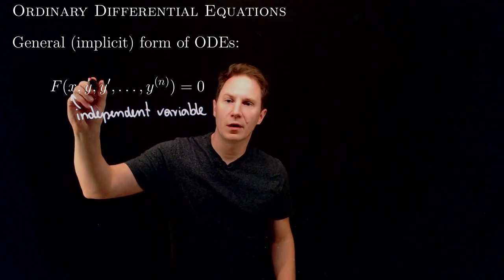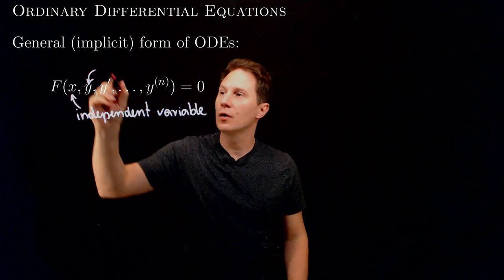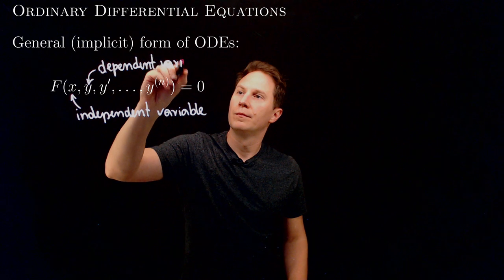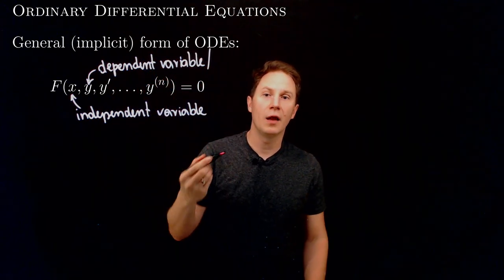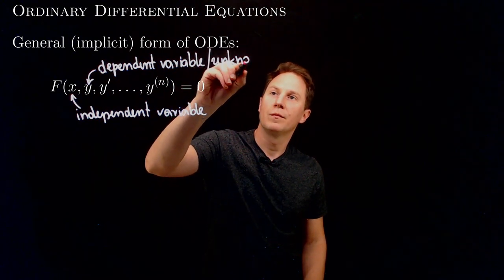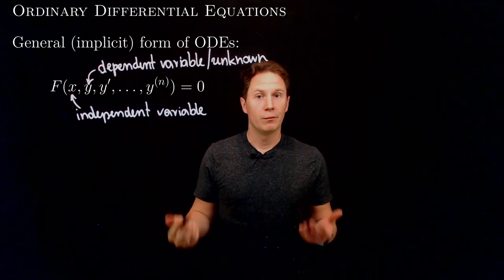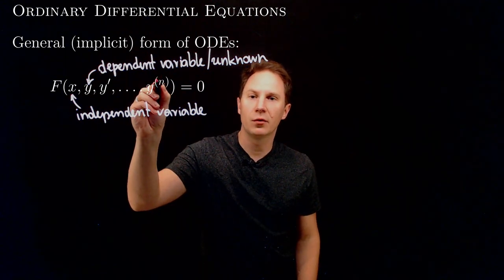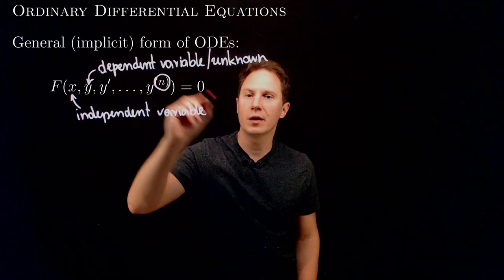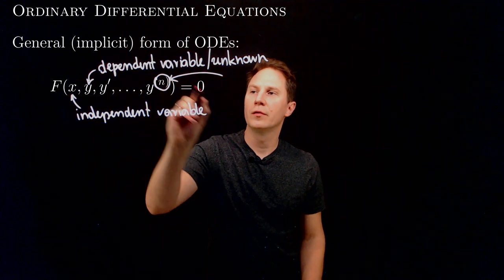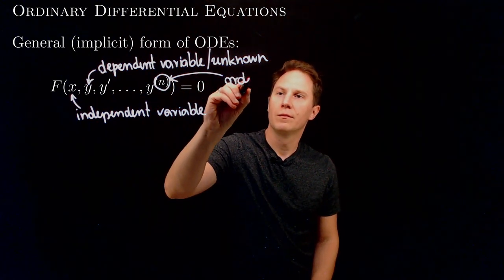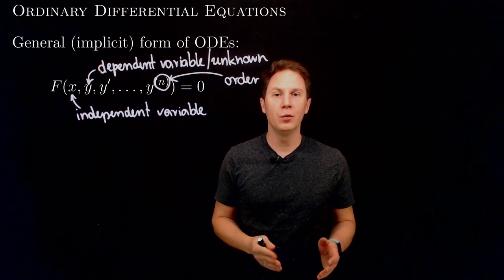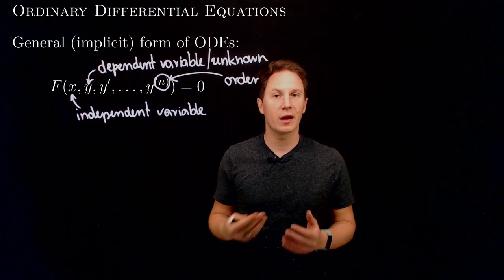y is the function of x — it depends on x — therefore we call it the dependent variable. This is just the unknown function that we are looking for, and by solving the differential equation we find out what y can be as a function. The highest order derivative of this unknown function gives us the order of the differential equation. We'll be looking at the cases where n equals 1 or n equals 2, so these are first order ODEs and second order ODEs.